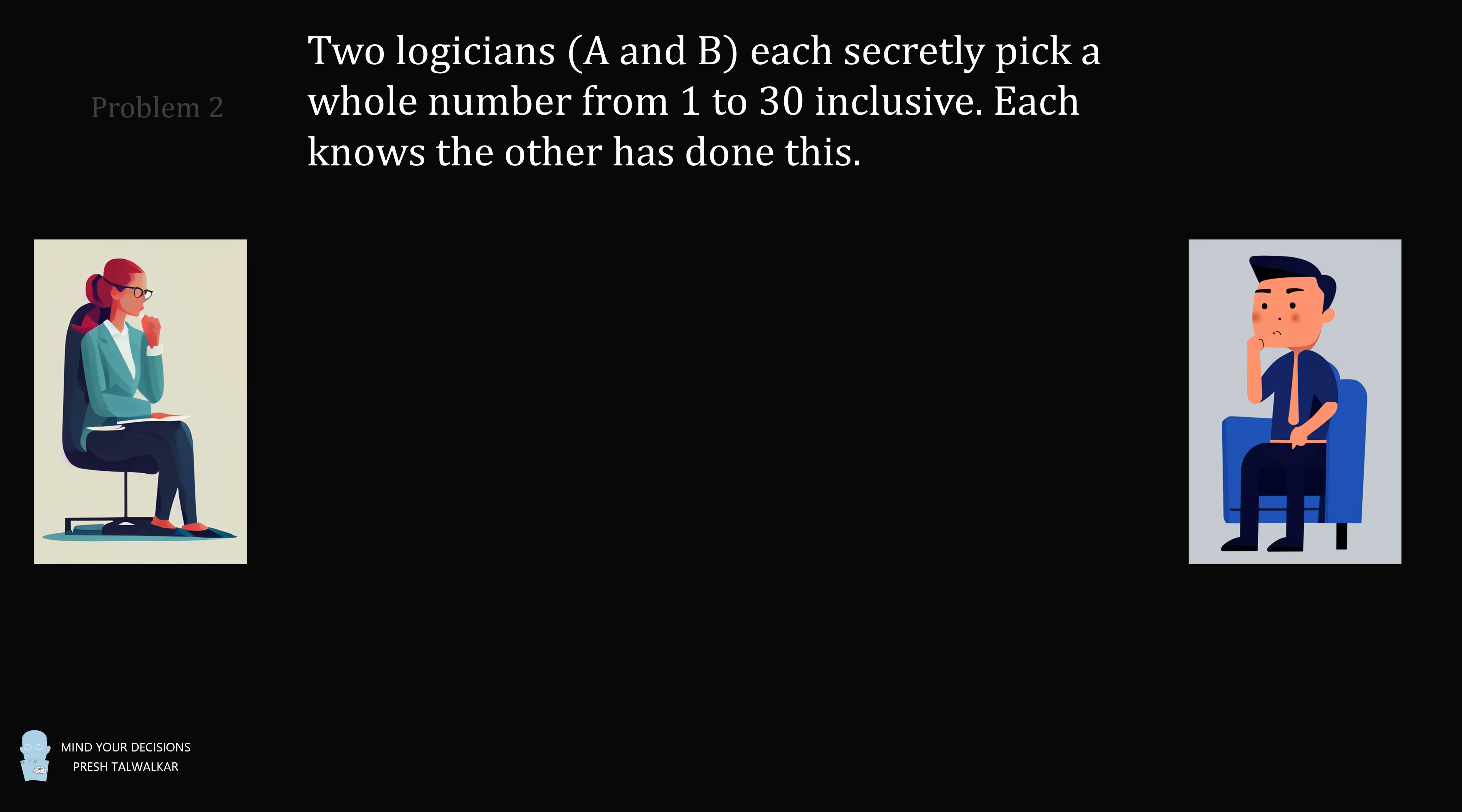Problem 2. Two logicians A and B each secretly pick a whole number from 1 to 30 inclusive. Each knows the other has done this. The following conversation takes place. A asks, Is your number double mine? B replies, I don't know. Is your number double mine?